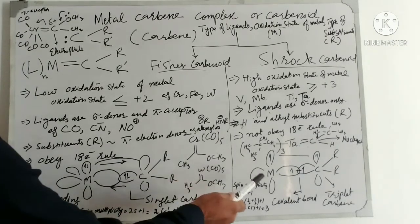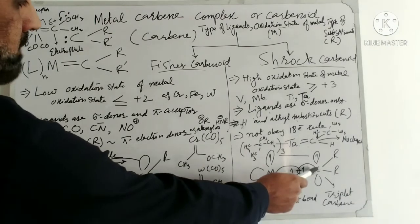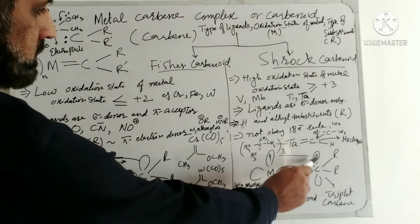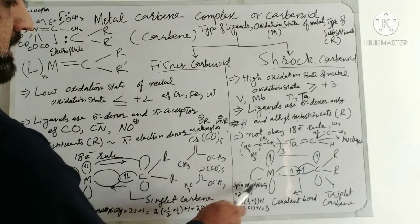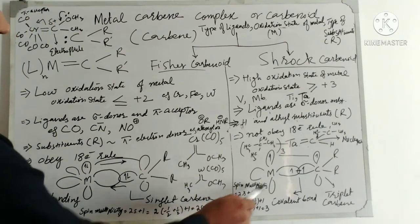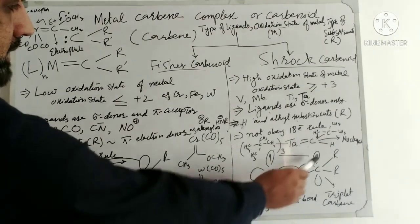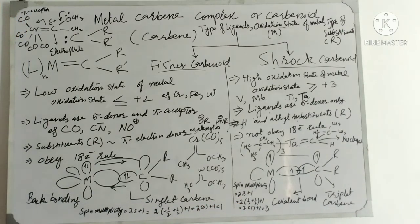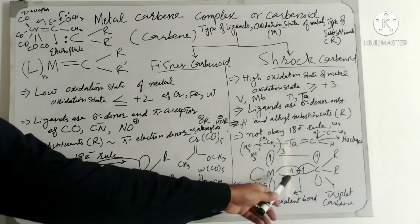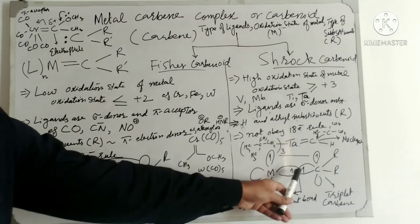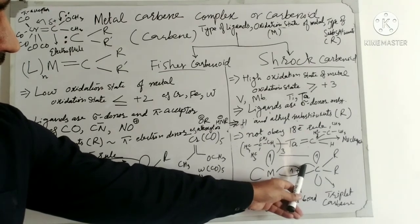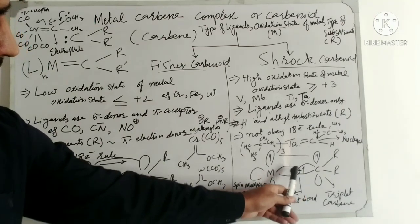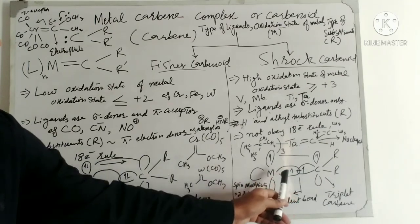In the case of Schrock Carbenoid, the carbene exists in the triplet state where both valence electrons have parallel spin, and spin multiplicity is calculated to be 3 using the formula 2S + 1. Regarding bonding with the metal, one bond is formed through mutual sharing: one electron from the carbene carbon and one electron from the metal are mutually shared, forming a covalent bond.